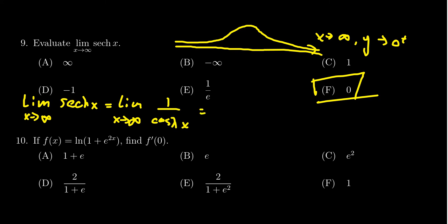Which hyperbolic cosine, we know its formula, which we should know, is going to be 2 over e to the x plus e to the negative x as x approaches infinity.